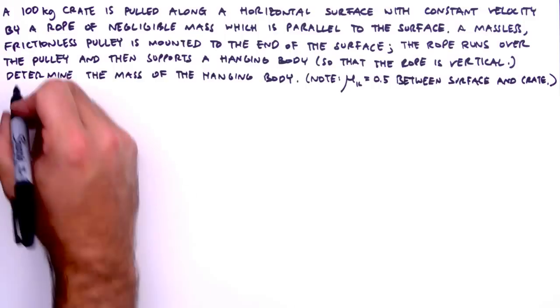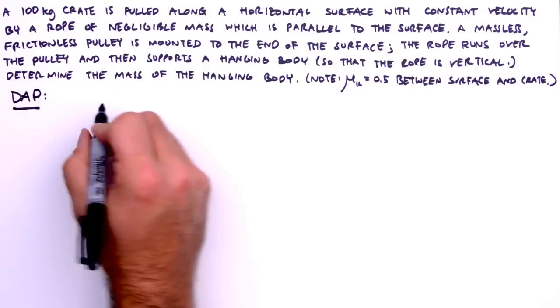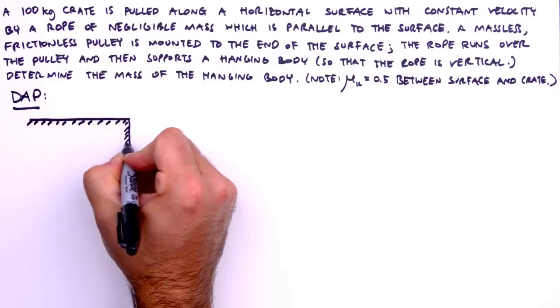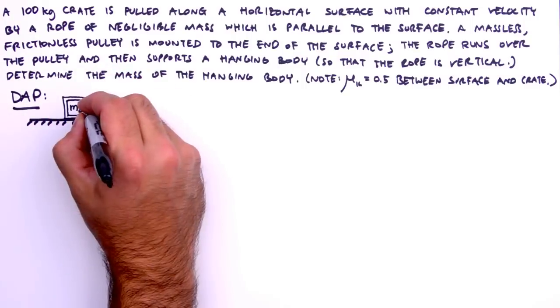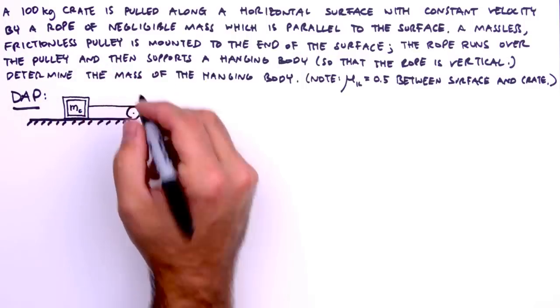The first step, as always, is to draw a picture. So here's our surface, and our crate, which we'll label M sub C. Attached to the crate is our special rope, which runs over our special pulley and down to our hanging body. We'll label that M sub B.